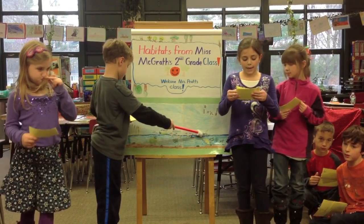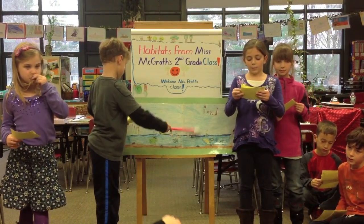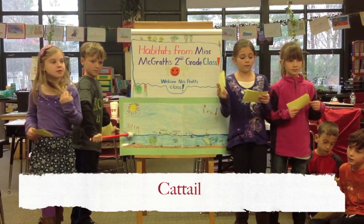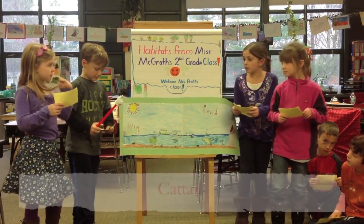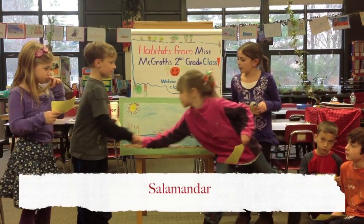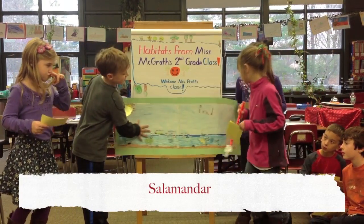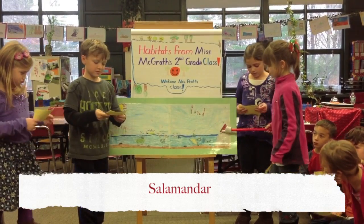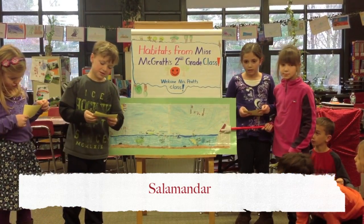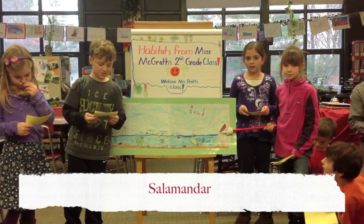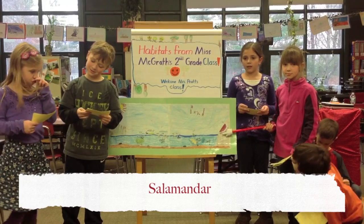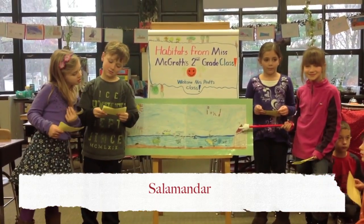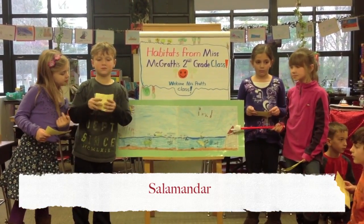Can you guess what I am? I am a cattail. The wind blows me very fast. This salamander lives in mud and hills. It eats small snails and insects. My predators are minks, herons, and water snakes.